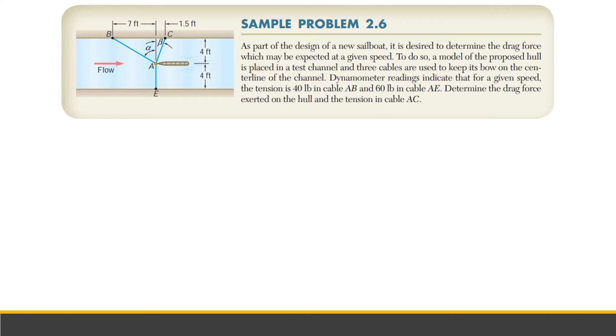As part of the design of a new sailboat, it is desired to determine the drag force which may be expected at a given speed. So this is the sailboat, the water is flowing. To do so, a model of proposed hull is placed in a test channel and three cables are used to keep its bow on the center line of the channel. There are diameter readings indicate that for a given speed, the tension in cable AB is 40 pounds.